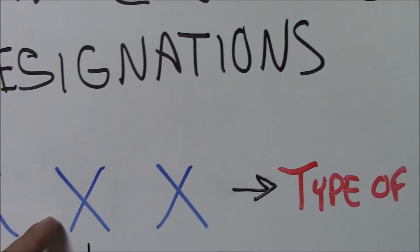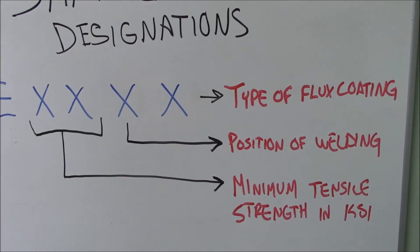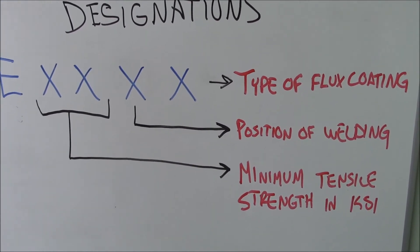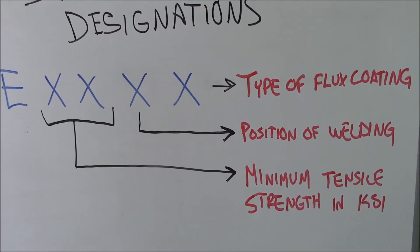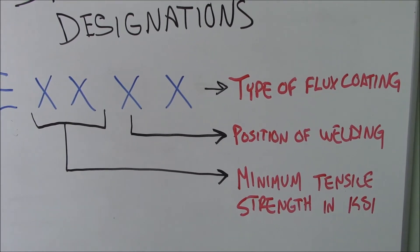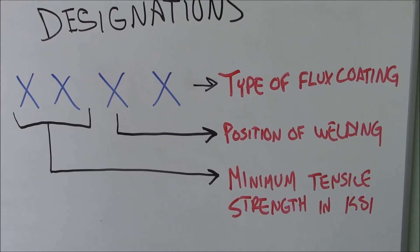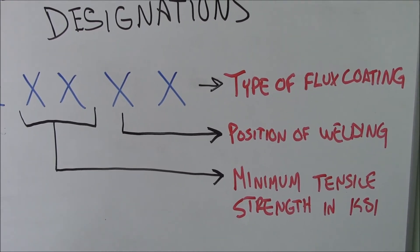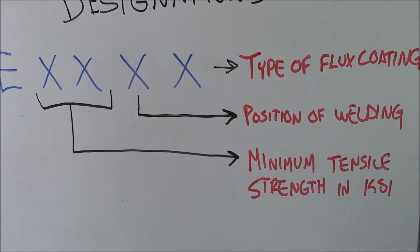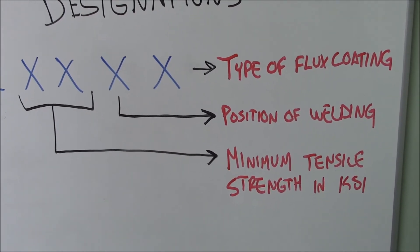Then our second X, as we follow down, that's going to let us know what the position of welding is. If it is a one, it's an all position rod. Two means it's meant for flat and horizontal welding only. Between threes and fours is when it's designed for a vertical down rod or certain other designations like that. The next two is your minimum tensile strength in KSI.